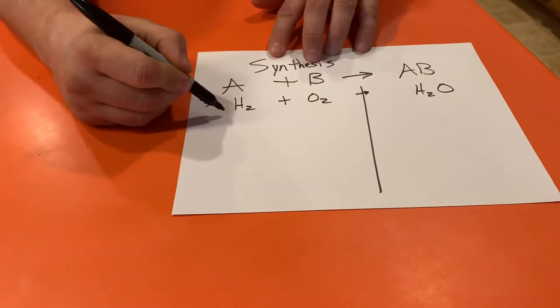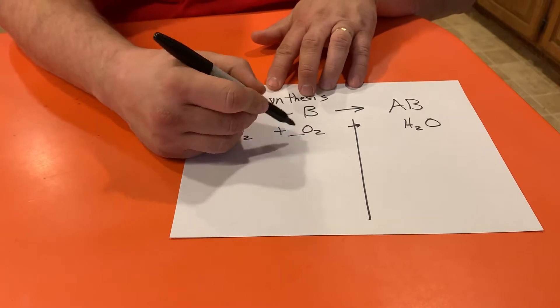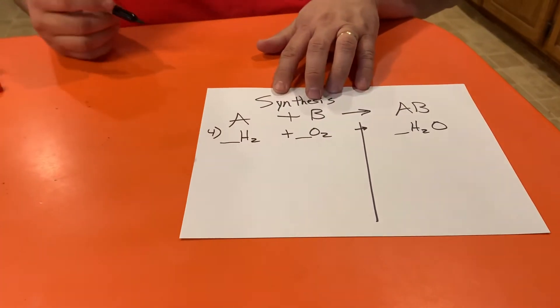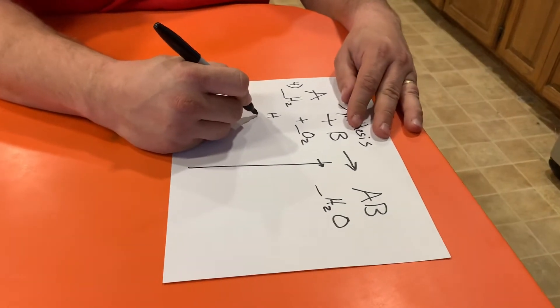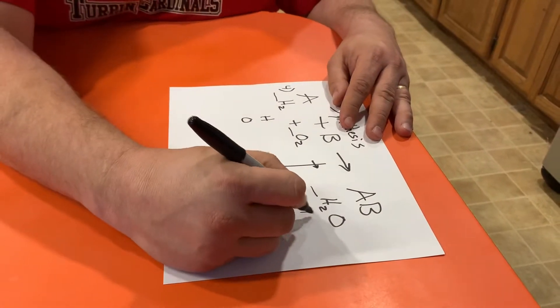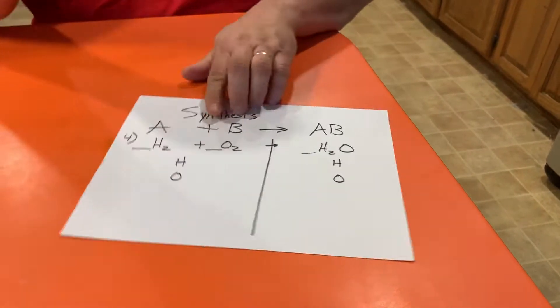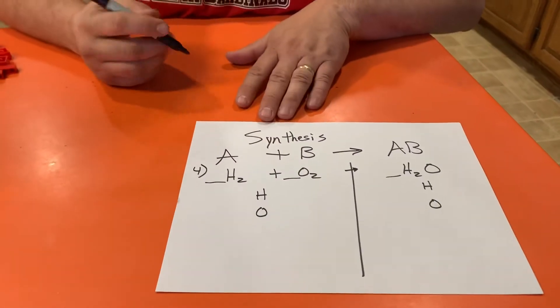So the first thing I do is I write out the equation like this and then I put blanks for numbers. Then the next thing I do is I go ahead and I write all of my different elements down.